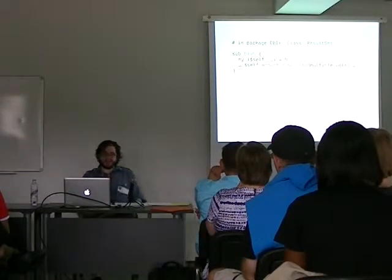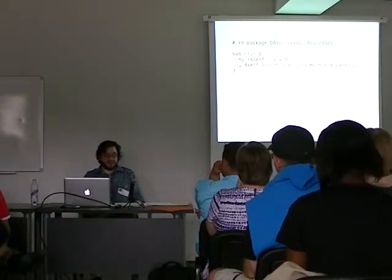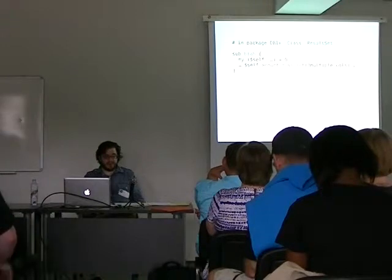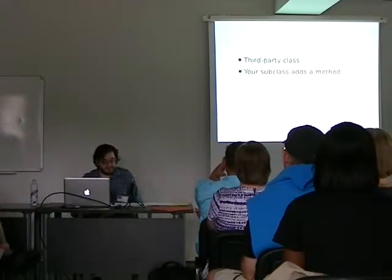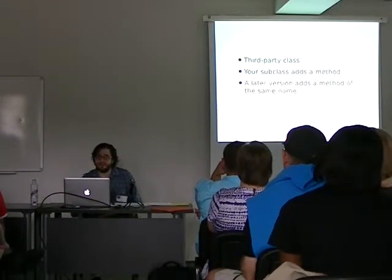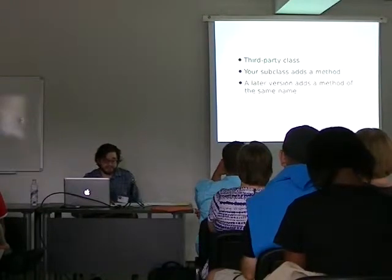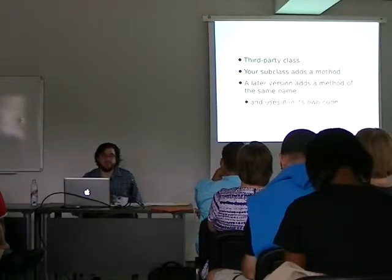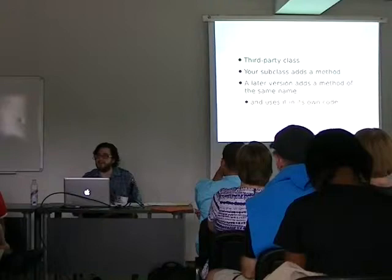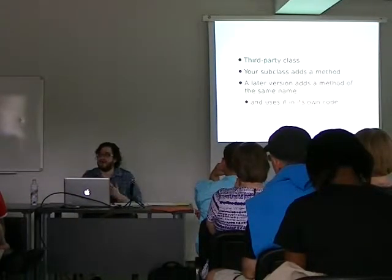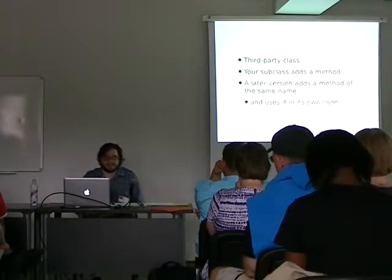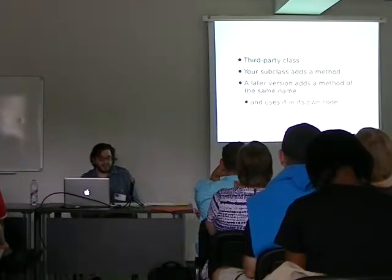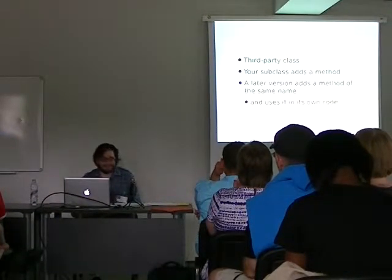And this can be expected to happen in pretty much any programming language, including languages that are much less dynamic than Perl. All it takes is to take a third-party class, subclass it with extra methods, then later on a new version of the third-party class adds a method of the same name and uses it somewhere in its own implementation. So in effect, the distinction between the two versions of the third-party class allows for a peculiar sort of temporal dynamism — even if you have static method name lookup in your language, you effectively have two versions of the class because they were written at different times.